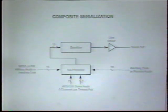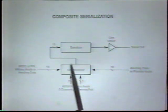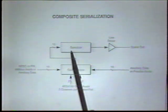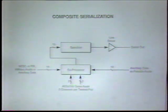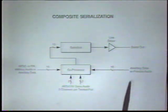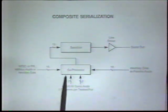Now that we have additional data to put into the serial signal, this block diagram starts with the basic serializer and adds a coprocessor. The purpose of the coprocessor is to add the TRS-ID and then add any other ancillary data to the incoming composite signal.